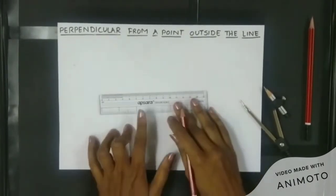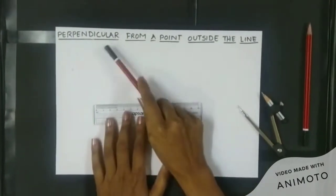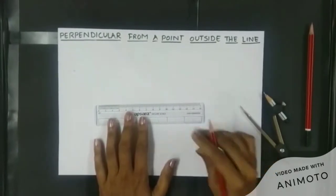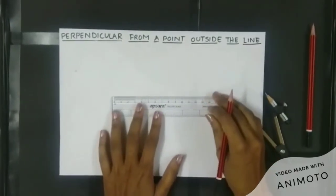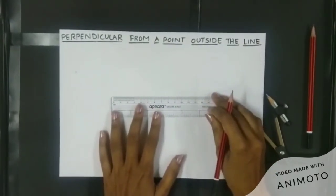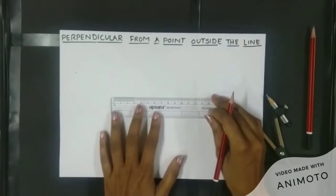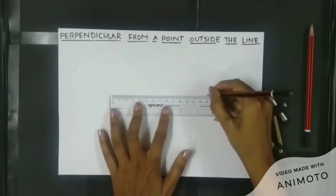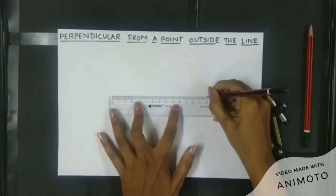In this video we are going to learn about how to draw a perpendicular from a point outside the line. The first step is we will draw a line segment. Here I'm drawing a line segment of 14 centimeters.